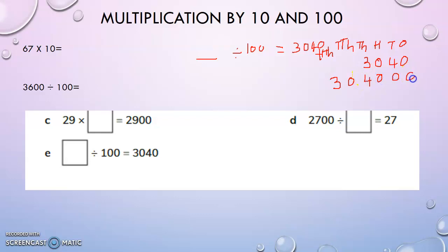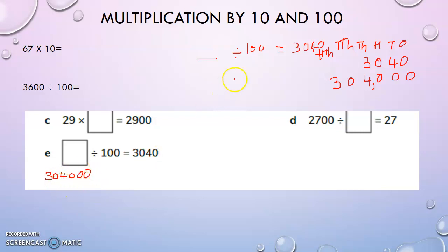Adding two more zeros, we get three hundred and four thousand — written as 3, 0, 4, 0, 0, 0. This number multiplied by hundred gives three thousand forty. That is how we obtain this number.